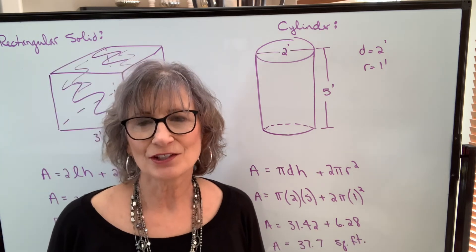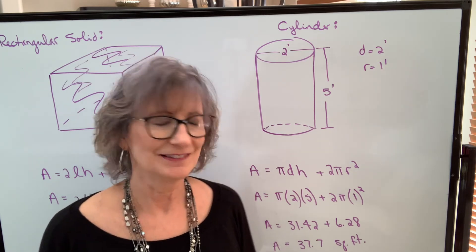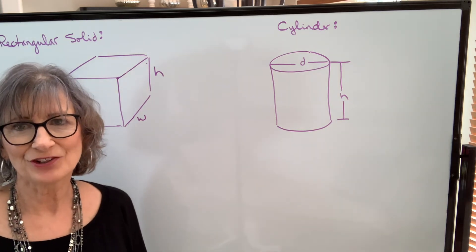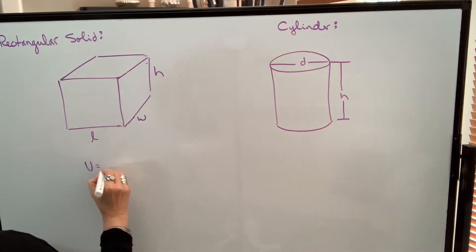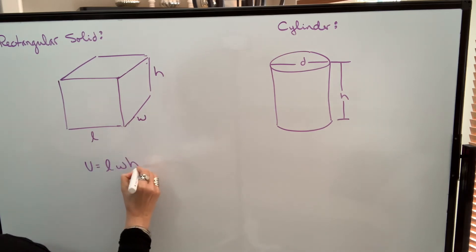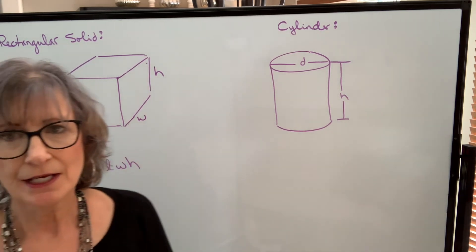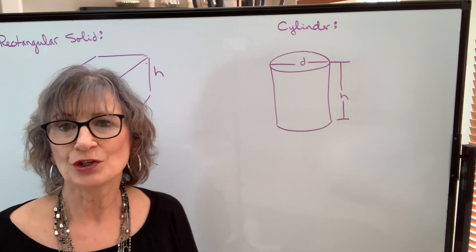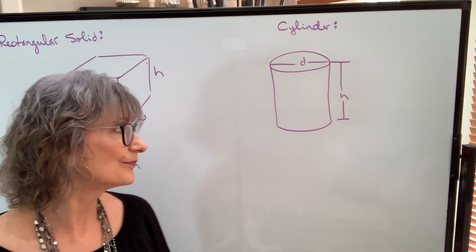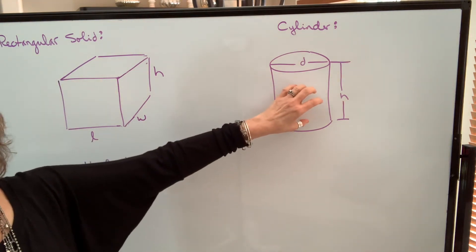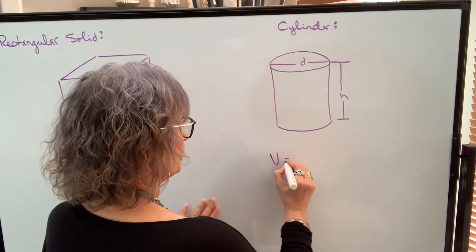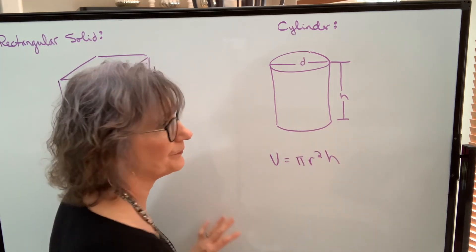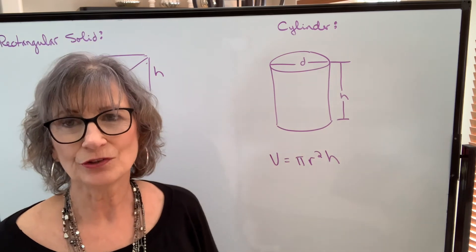Now let's take a look at the volume of a rectangular solid and a cylinder. Calculating the volume is actually much easier than the area. The volume is simply length times width times height for a rectangular solid, and it's a three-dimensional measurement, so you should have cubic feet, cubic inches, cubic yards, and so on. With a cylinder, the volume is pi times radius squared times height — again, in cubic units.